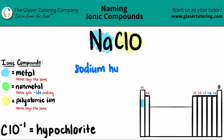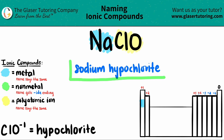So ClO is hypochlorite. You don't have to change the polyatomic name. And that's it — the name for NaClO is sodium hypochlorite.